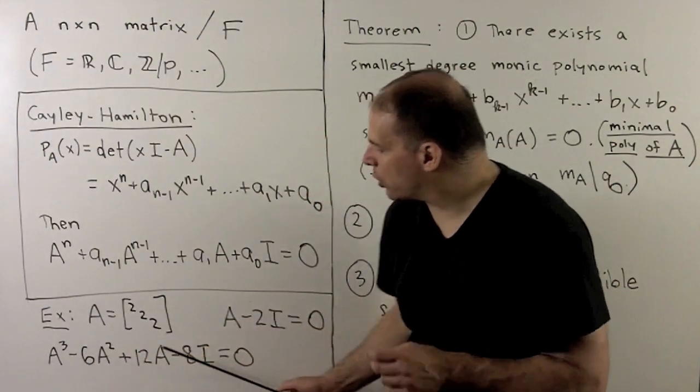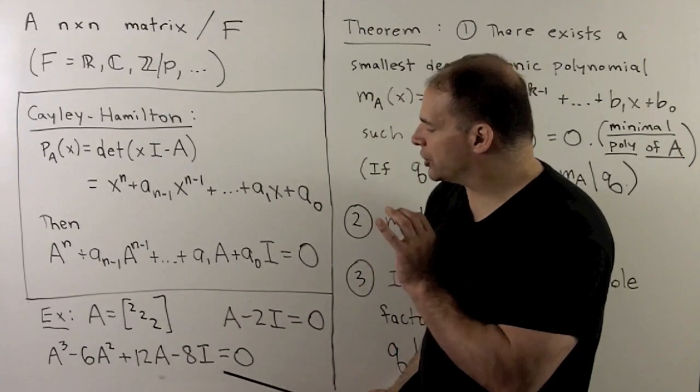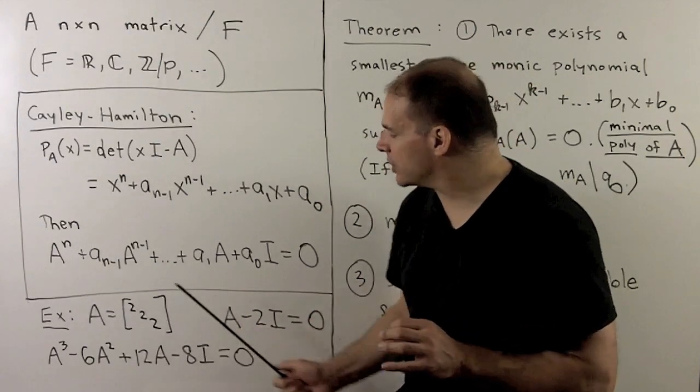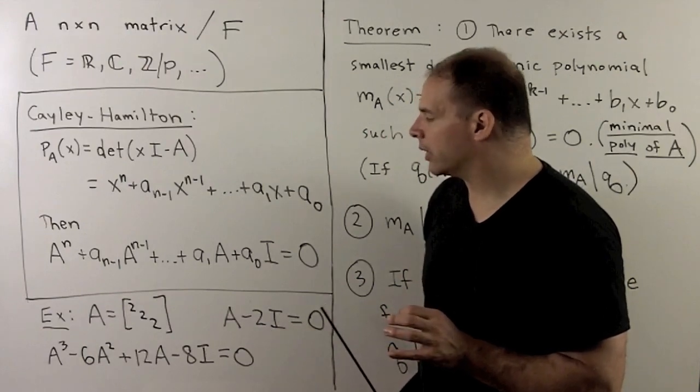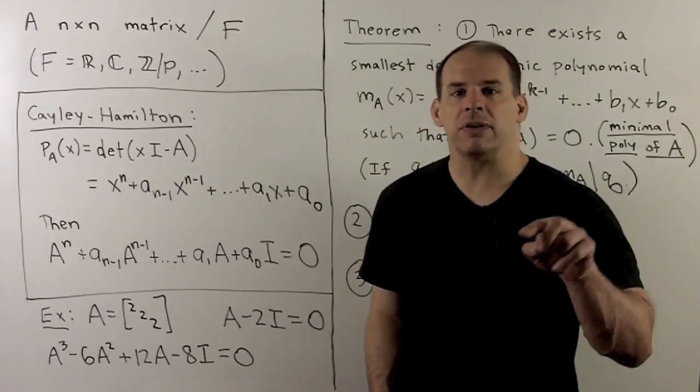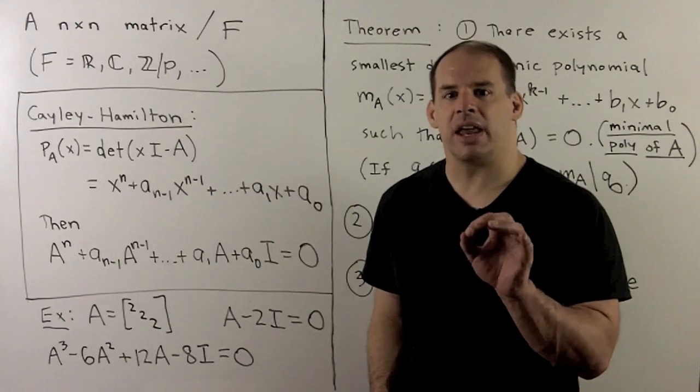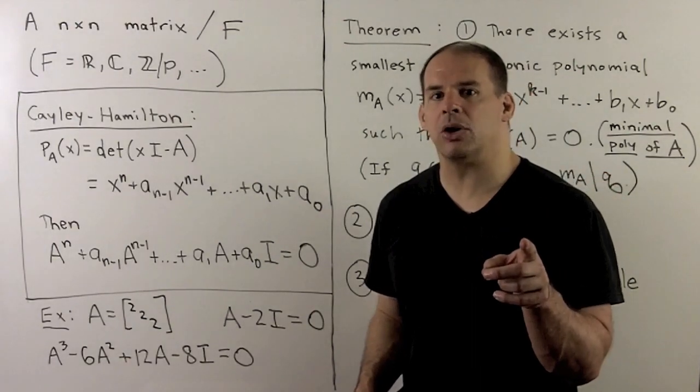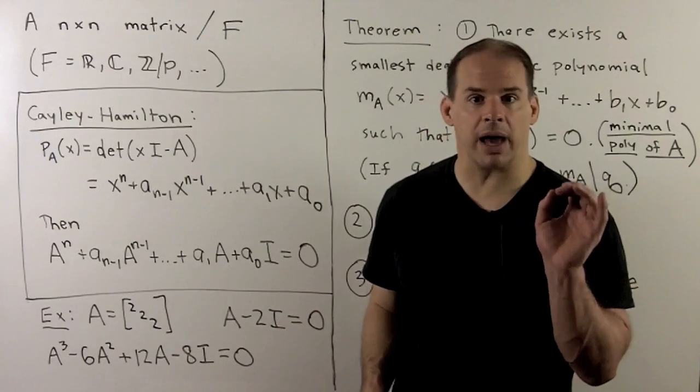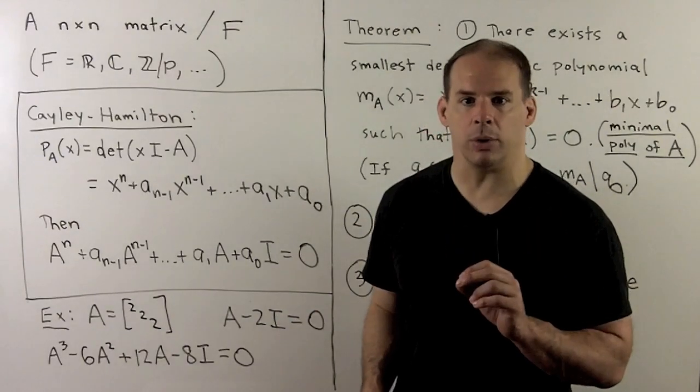Now, you'll note this equation's overkill, because just by observation, we see that A satisfies A minus 2I equal to zero. So if we're looking for polynomials that send our matrix to zero, we could start with a characteristic polynomial, but we might be able to do better. And this is where minimal polynomials come in.